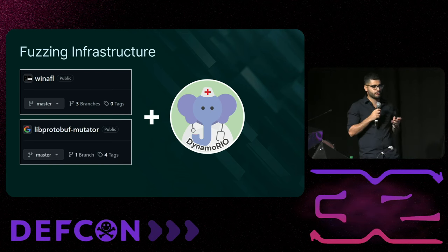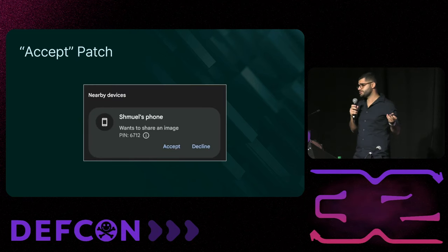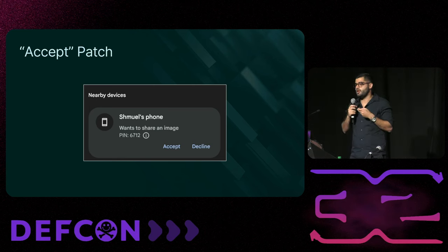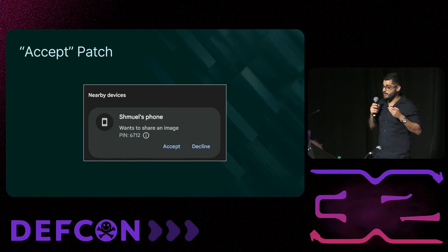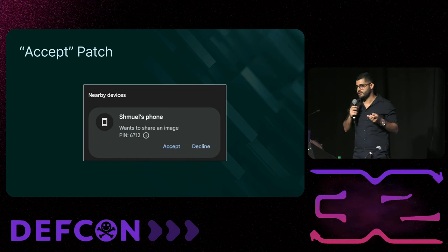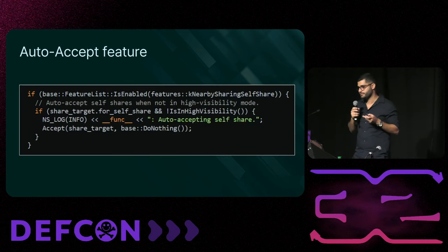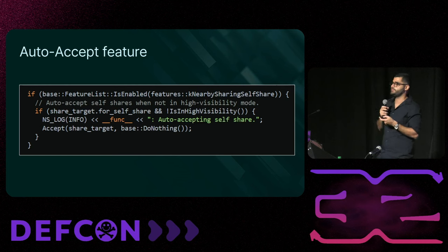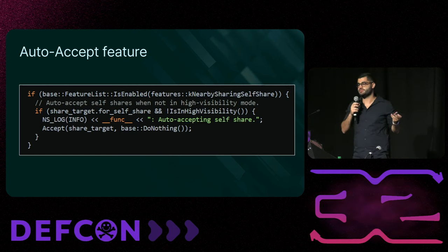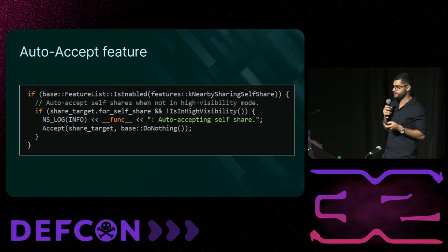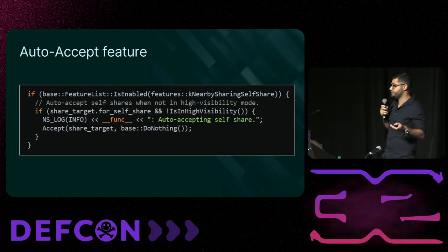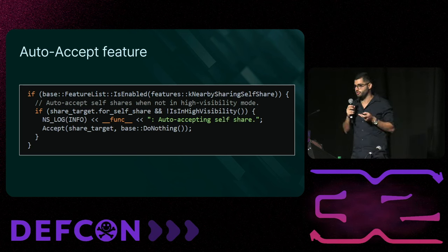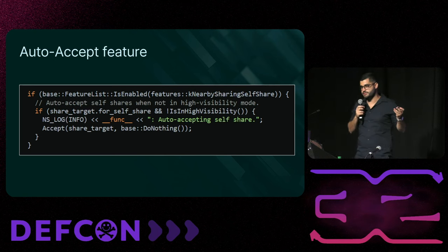Our goal was to fuzz an entire session of file sending rather than just individual packets. However, when a file is sent an accept or decline button is prompted on the responder side. Since we wanted to fuzz all stages including file acceptance, we needed our fuzzing target to accept every file automatically. Within the Chromium open source project we found that Google already implemented a built-in feature called auto-accept, so we just needed to patch the relevant if-statement to make it work all the time.